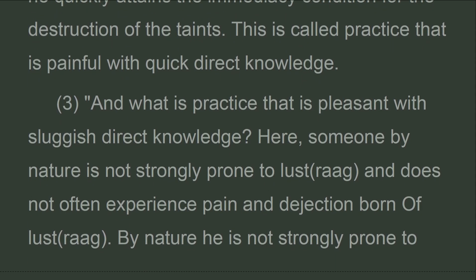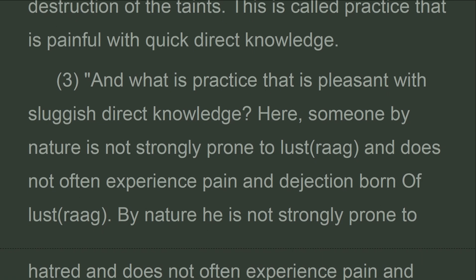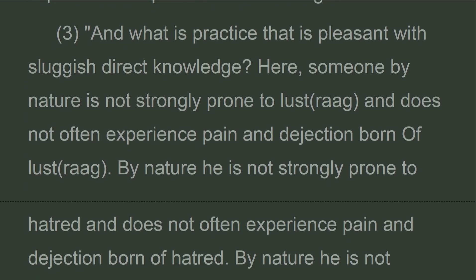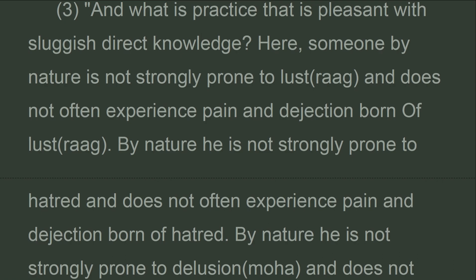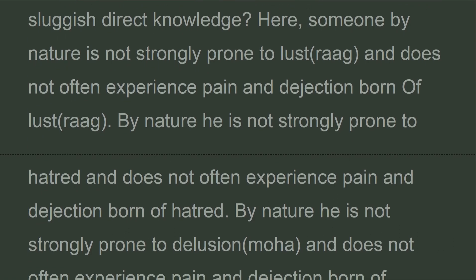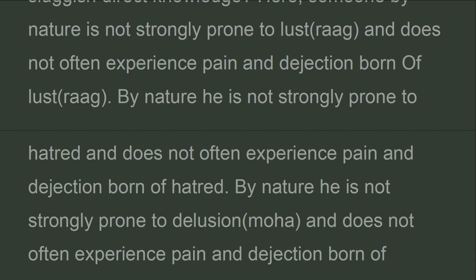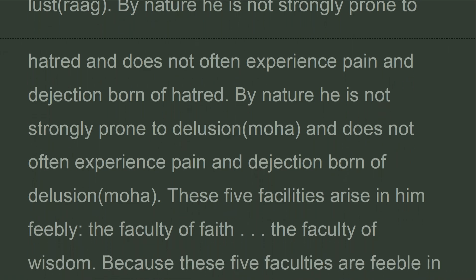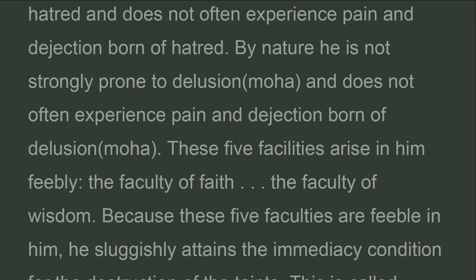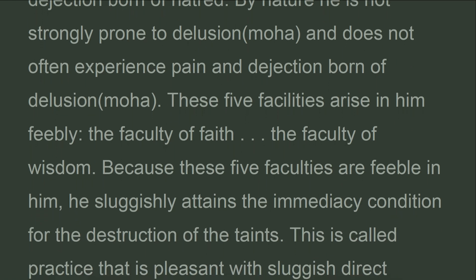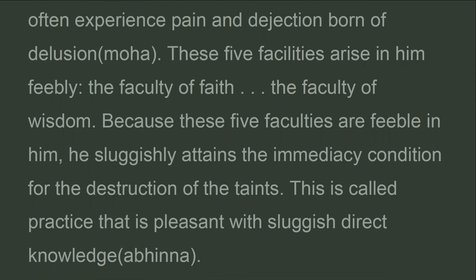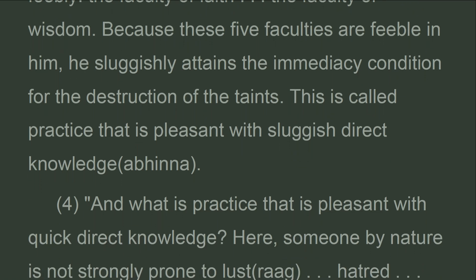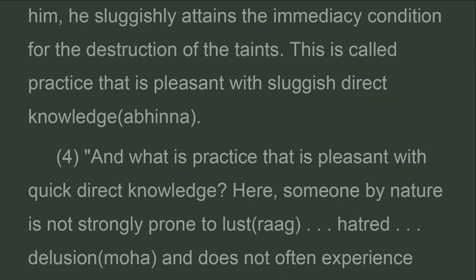And what is practice that is pleasant with sluggish direct knowledge? Here, someone by nature is not strongly prone to lust, hatred, or delusion, and does not often experience pain and dejection born of these. These five faculties arise in him feebly: the faculty of faith through the faculty of wisdom. Because these five faculties are feeble, he sluggishly attains the immediacy condition for the destruction of the taints. This is called practice that is pleasant with sluggish direct knowledge.